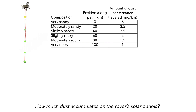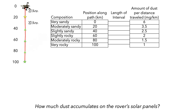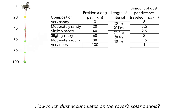The first thing to do is to break the path down into distance intervals. We'll label the path with a position from the start, and then make some space to record the length of each distance interval. Each of the intervals has a length of 20 kilometers. Next, let's make some space to compute the amount of dust we accumulate in each distance interval.